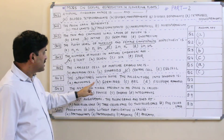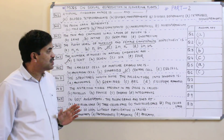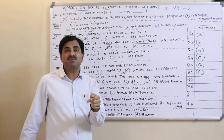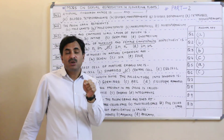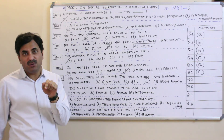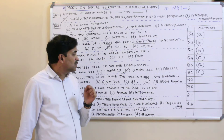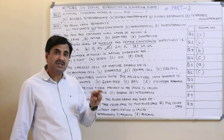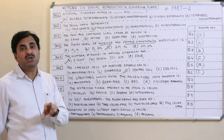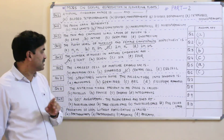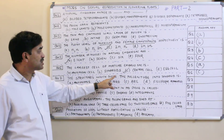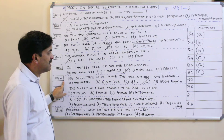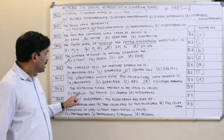Question number seven: the structure which guides the pollen tube into the synergids. When the pollen grain germinates, the pollen tube penetrates the stigma, moves towards the style, then towards the ovary where the ovule is present. The pollen tube enters the ovule for fertilization, guided by the filiform apparatus — finger-like projections present in the synergids that provide chemical guidance. The structure is the filiform apparatus. Question number seven has the answer D.